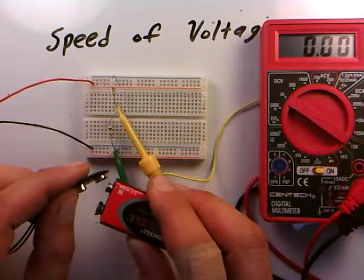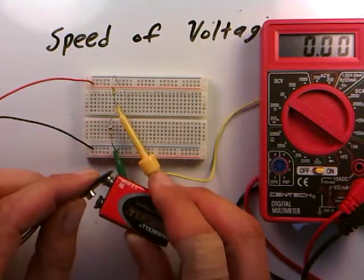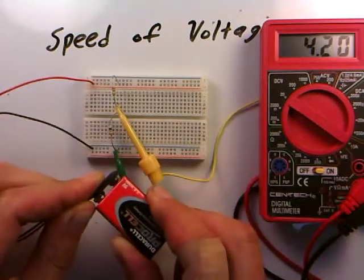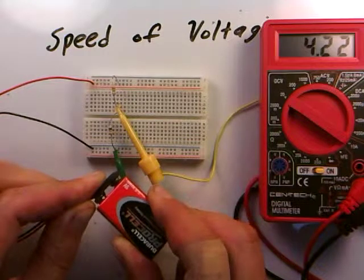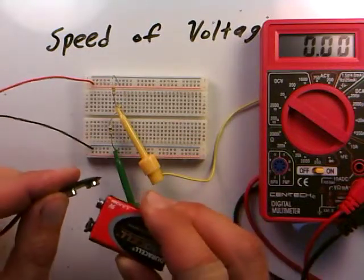In 3, 2, 1, I'll connect the battery. So 3, 2, 1. 4.22 volts. And when I let go of it, it immediately disappears.